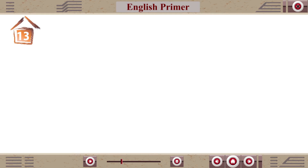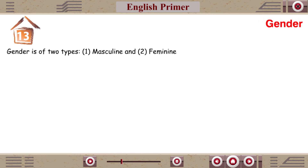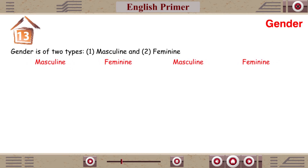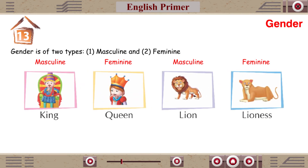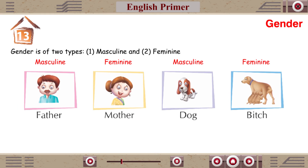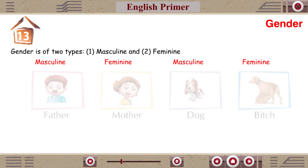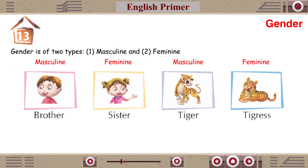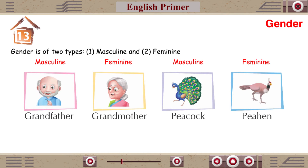Chapter 13: Gender. Gender is of two types: masculine and feminine. King — Queen, Lion — Lioness, Boy — Girl, Cock — Hen, Father — Mother, Dog — Bitch, Brother — Sister, Tiger — Tigress, Grandfather — Grandmother, Peacock — Peahen.